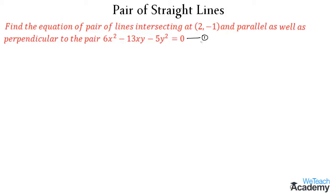First, let us compare this equation with the homogeneous equation, so we get the values as a = 6, then 2h = -13, and b = -5. Now we need to find the equation of pair of lines those are perpendicular to equation 1 and intersecting at (2, -1). Let us assume x0 = 2 and y0 = -1.